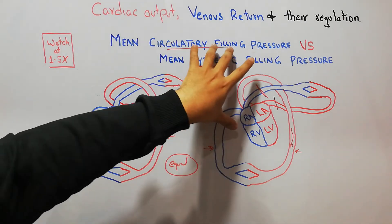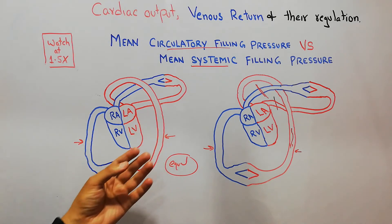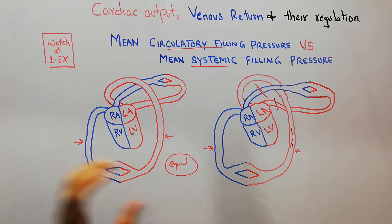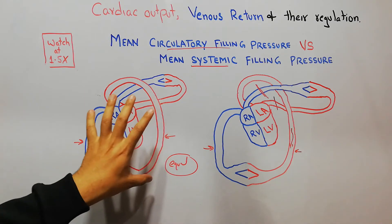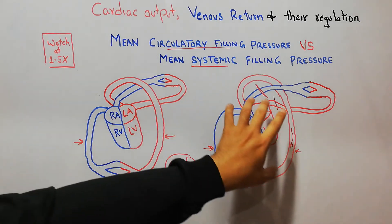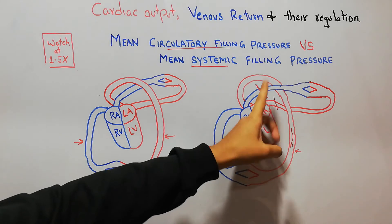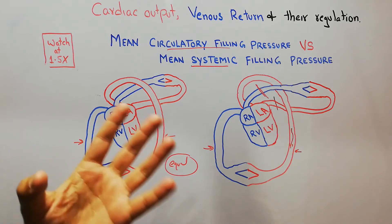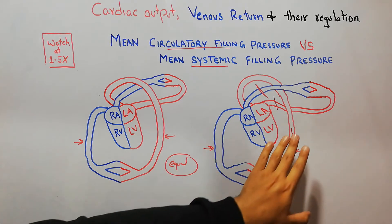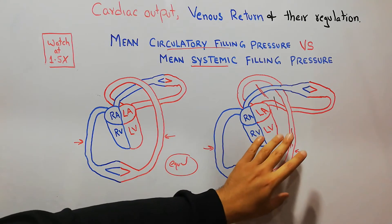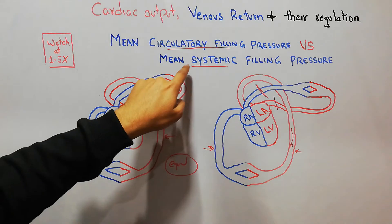To summarize: mean circulatory filling pressure is the pressure in the blood vessels when heart pumping is stopped, blood flow ceases, and the pressure on the arterial and venous sides equalizes. That pressure, measured anywhere in the circulation — either systemic or pulmonary — is the mean circulatory filling pressure. When heart pumping is stopped and pulmonary vessel circulation is also blocked, the pressure measured in systemic vessels when blood flow stops is the mean systemic filling pressure.